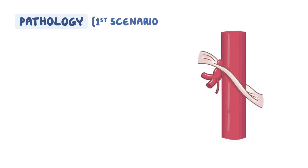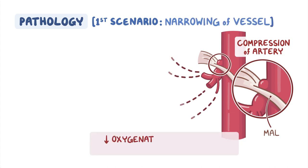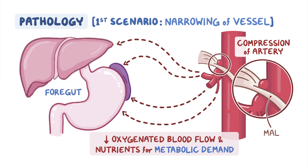The compression is thought to result in four scenarios. The first scenario is directly related to the compression of the artery, causing a narrowing of the vessel, resulting in insufficient oxygenated blood flow and nutrients for metabolic demand to the upper abdominal organs, causing symptoms.